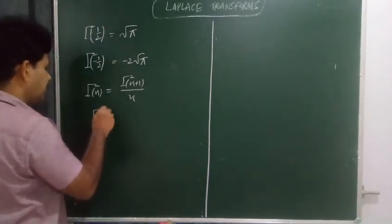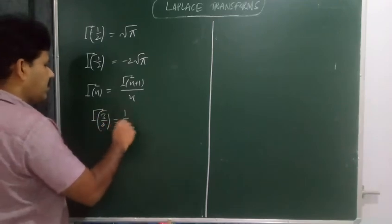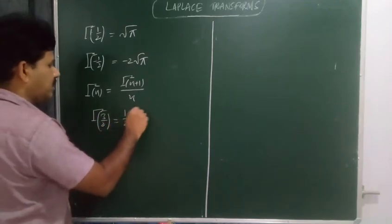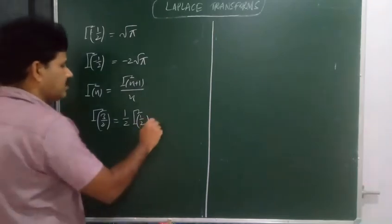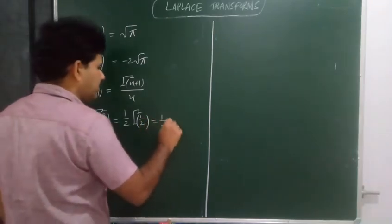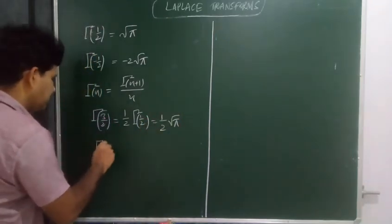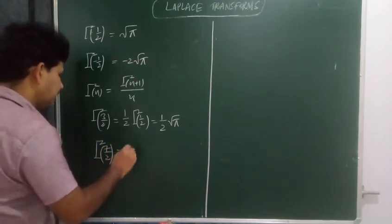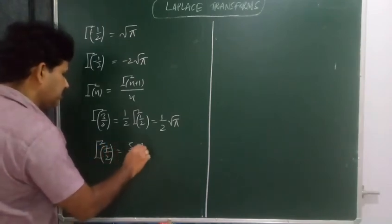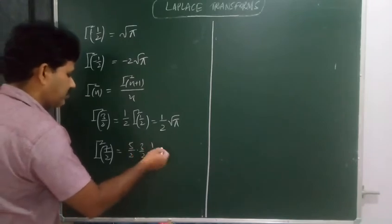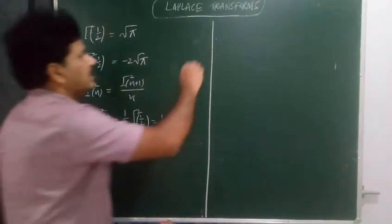Gamma of 3/2 equals 1/2 times gamma of 1/2, whose value is (1/2) root pi. Gamma of 7/2 equals 5/2 times 3/2 times gamma of 1/2, whose value is (15/8) root pi.